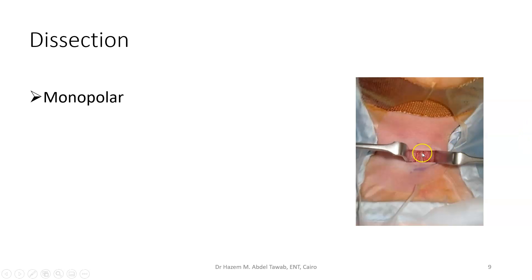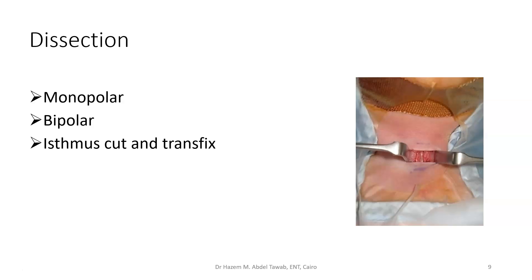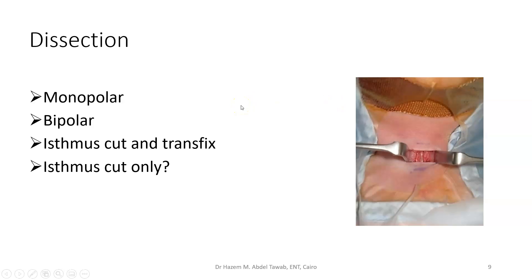For dissection, you can use the monopolar or bipolar technique. Regarding the thyroid isthmus: in adolescents and older children, you will need to cut and transfix the isthmus to avoid bleeding — dissect the strap muscles, identify the isthmus over the third and fourth tracheal rings, cut it, and ligate it. In young children and infants, cutting the thyroid isthmus with bipolar is usually enough, and no significant bleeding is typically encountered.